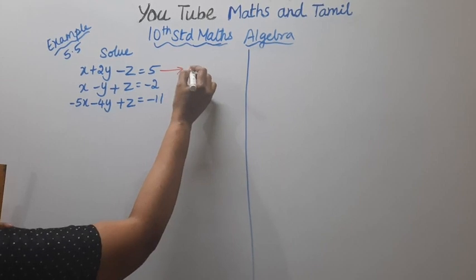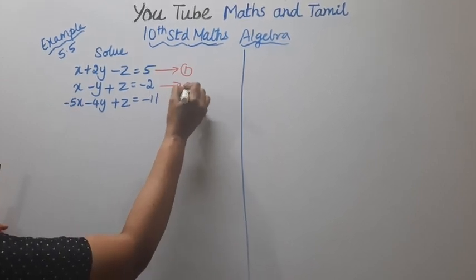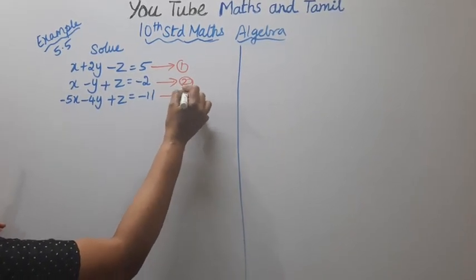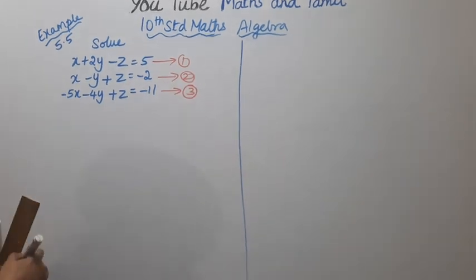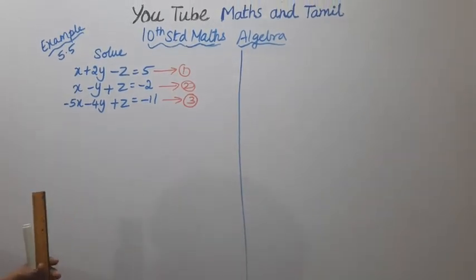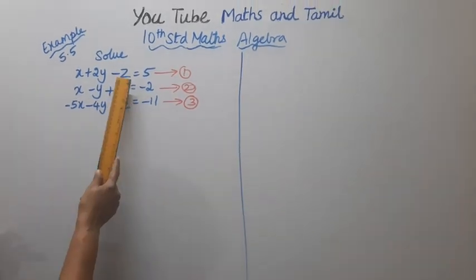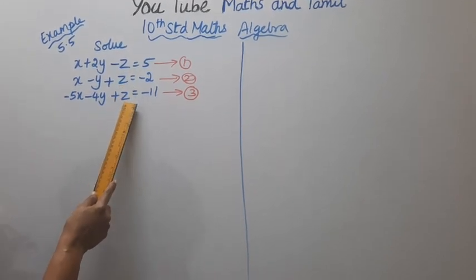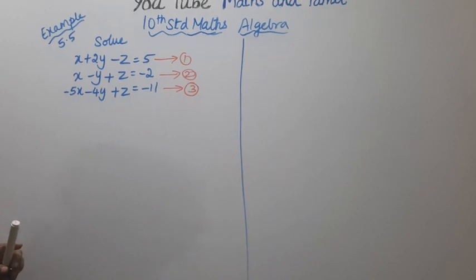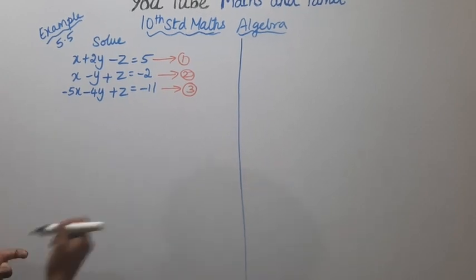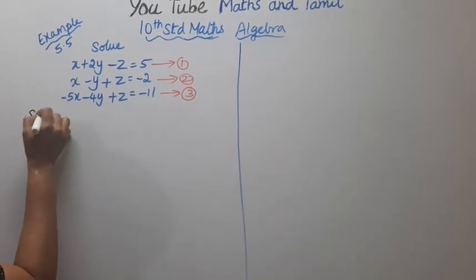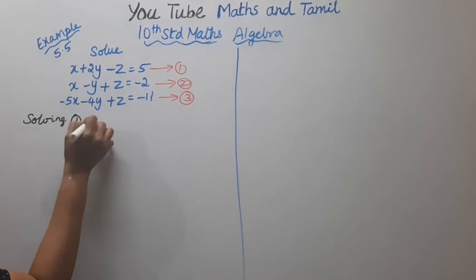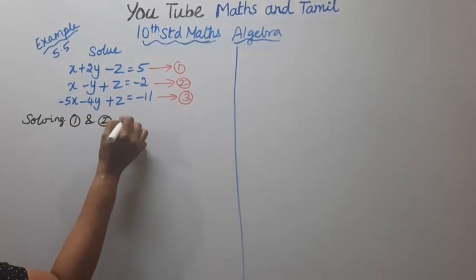This is the first equation, the second equation, the third equation. The z terms are: minus z, plus z, plus z — opposite signs, so they cancel. This makes the system easy to solve. We start by solving the first and second equations.